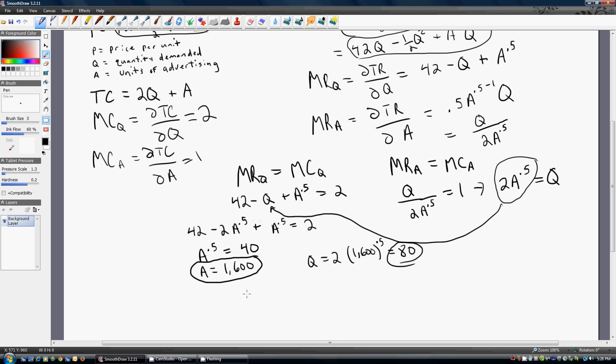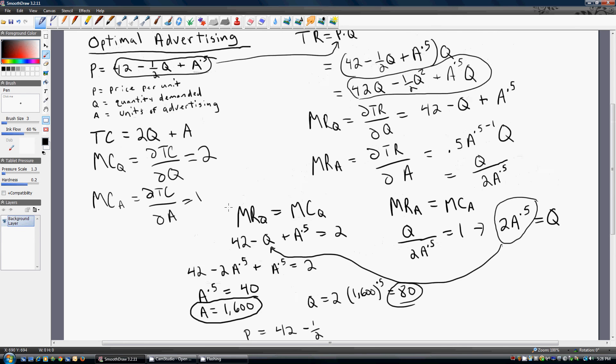And one last thing we can get, we can get the firm's price. The firm's price is 42 minus 1 half times Q. This is just the inverse demand curve that we started with up here.